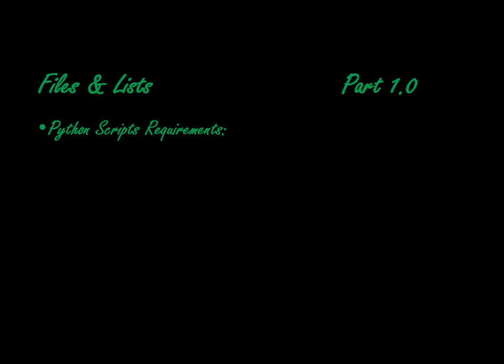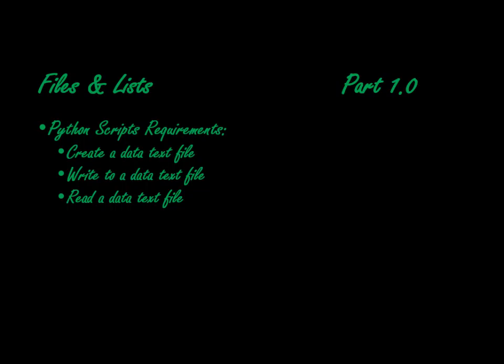Let's look at some requirements for the script we're going to create. The first requirement is that it has to be able to create a data text file. We know we're going to record data so we have to be able to create that file. Then we have to be able to write to that text file, and then we've got to read that text file and take the data and turn it into information — that's what we'll be doing next week.